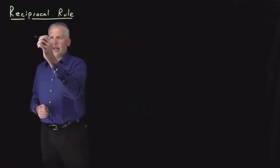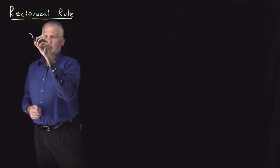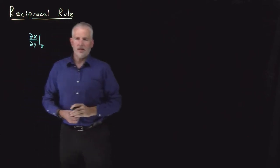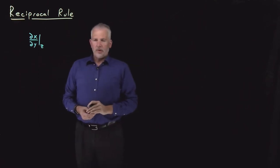Another partial derivative identity that comes in very handy is the reciprocal rule, and that one is fairly simple. If we have a partial derivative dx dy at constant z, that's related to...